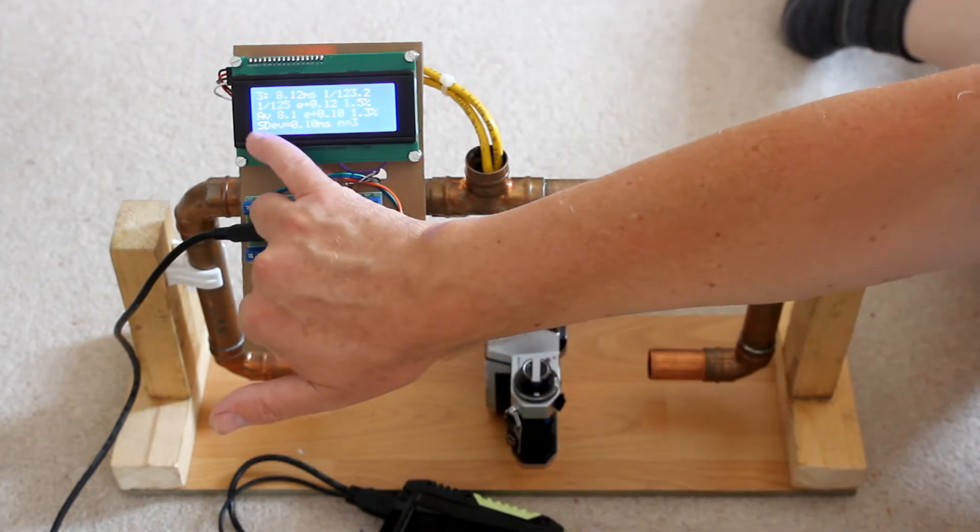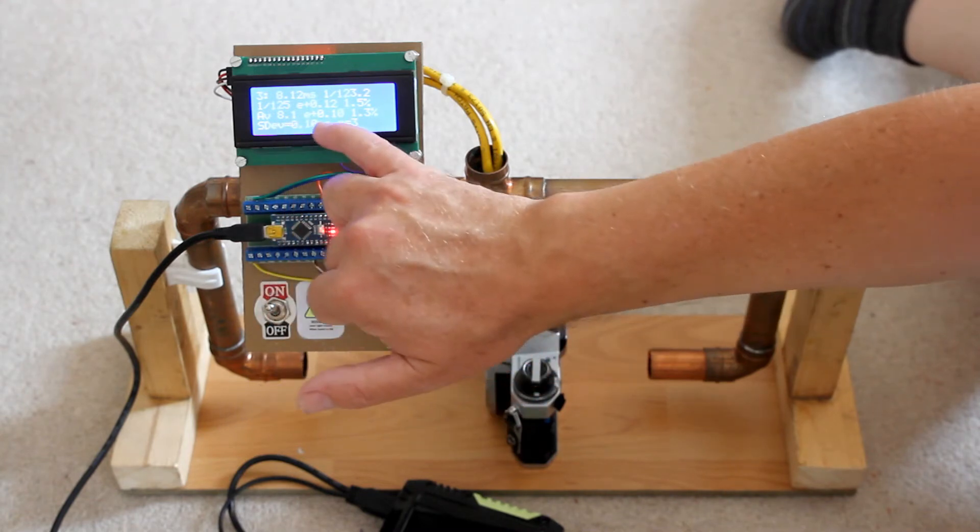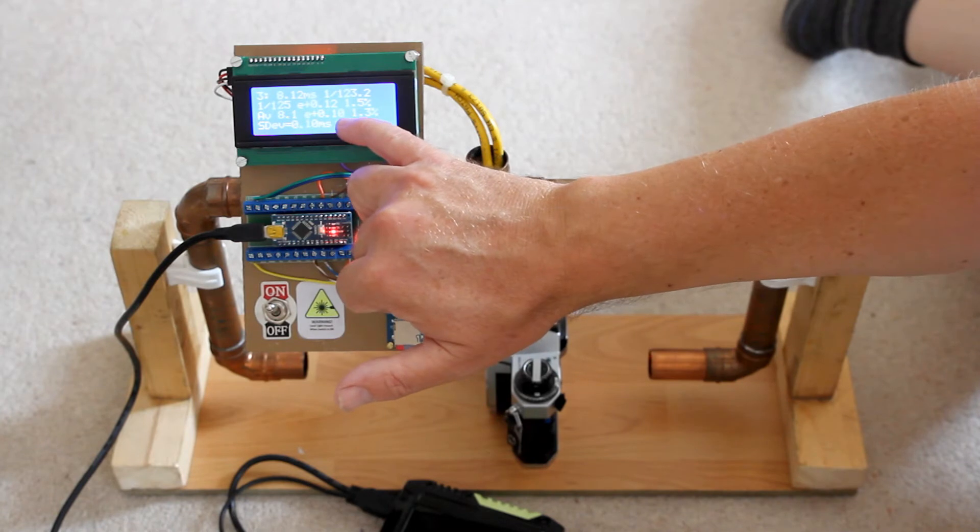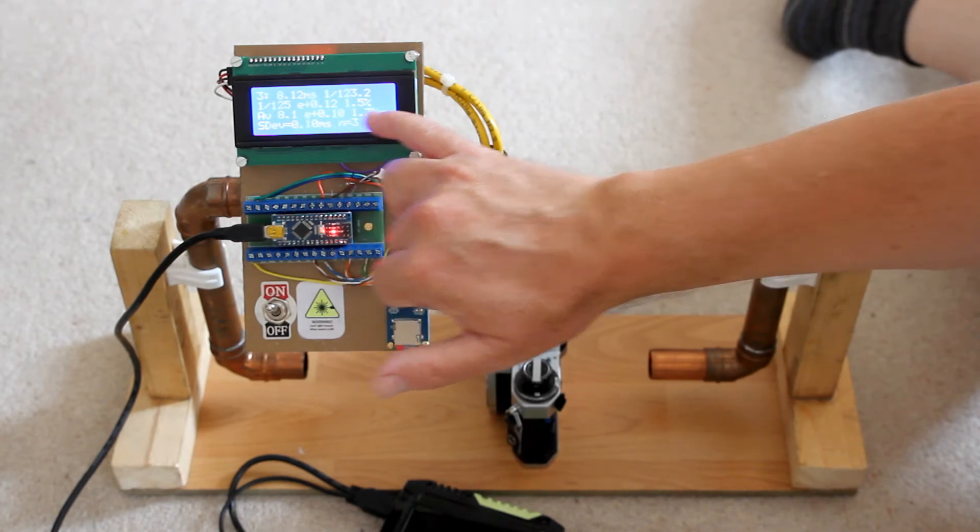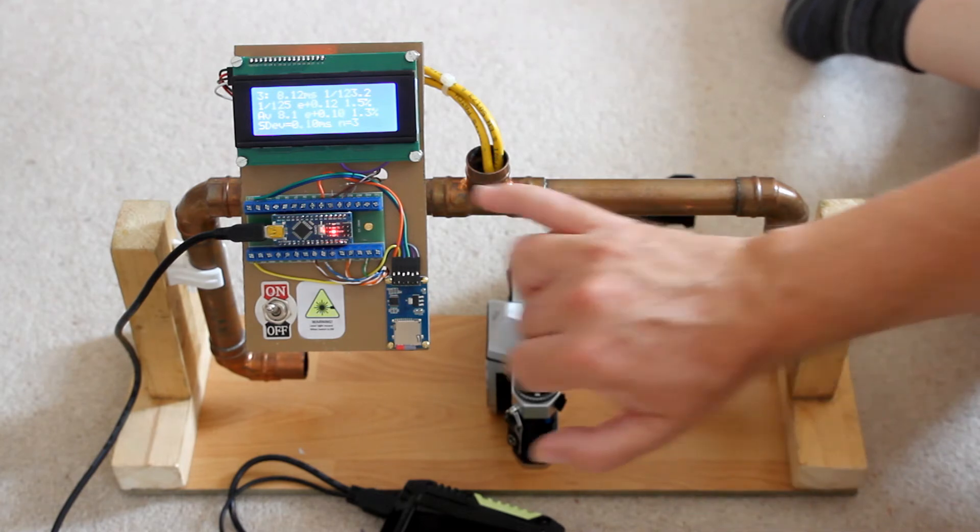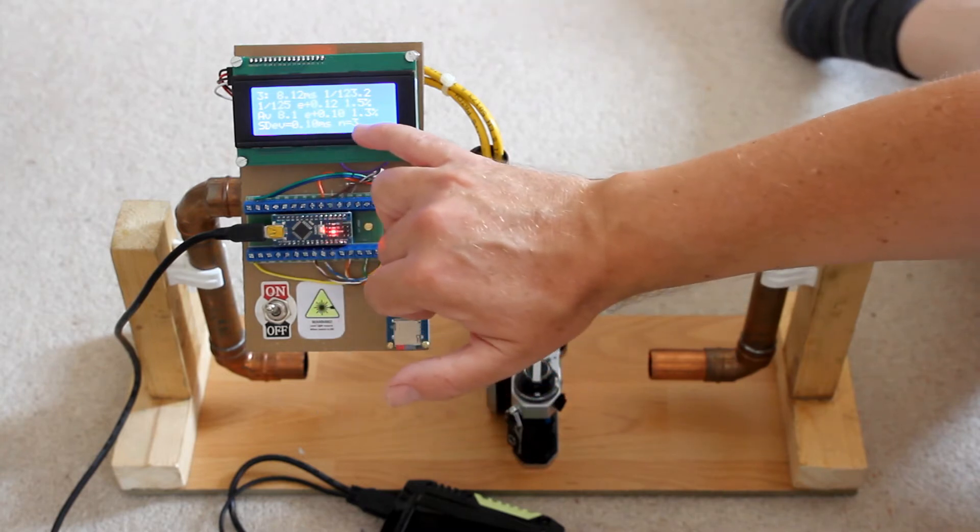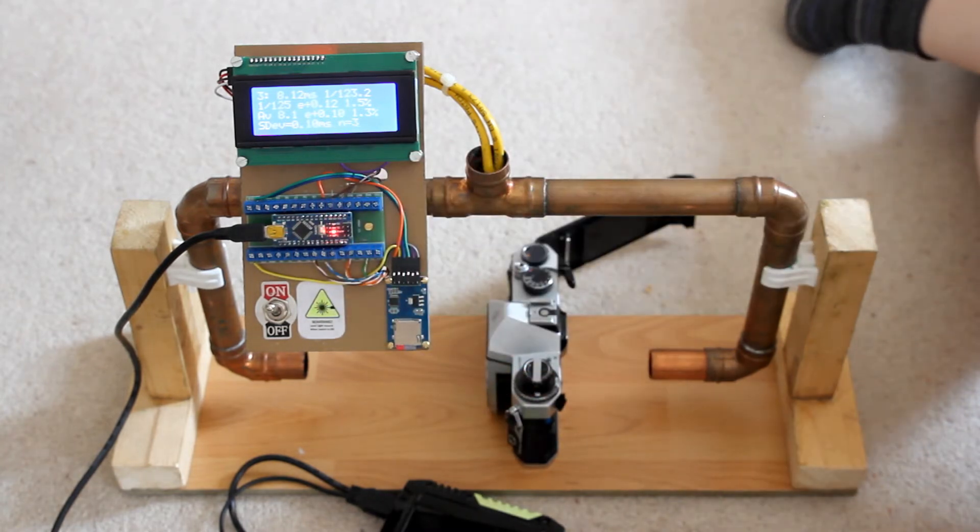So now the display is showing us that the average here is 8.1 milliseconds, that the average error is 0.1 milliseconds plus and that the average error is plus 1.3 percent. So it's pretty accurate. We've got a standard deviation of 0.1 milliseconds and the number of records in the test set is 3.